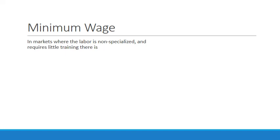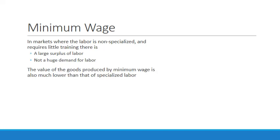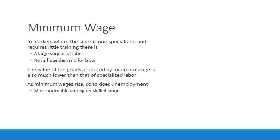In markets where labor is non-specialized and requires little training, there is a large surplus of labor. Minimum wage only affects markets in which labor is non-specialized and requires little training — as a result, a huge number of people are eligible for those jobs and there's a large surplus of labor, but there isn't a huge demand for labor in that market. The value of goods produced by minimum wage workers is also much lower than that of specialized labor. As minimum wage rises, so too does unemployment — most notably among unskilled labor. It affects teenagers the most, as shown by teenage unemployment rates rising alongside minimum wage increases from January 2002 to February 2010.